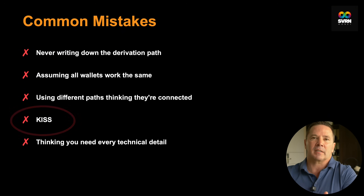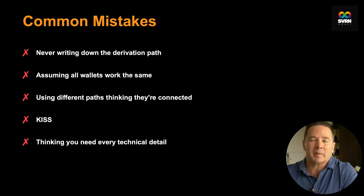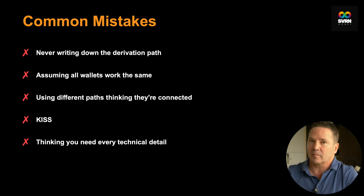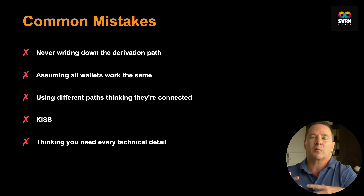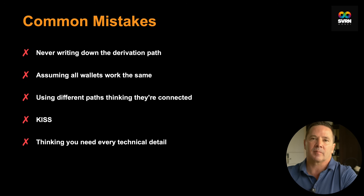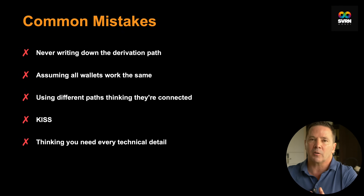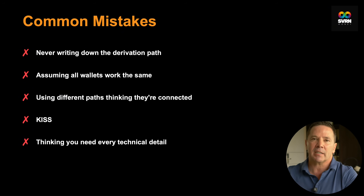Mistake four: not keeping it simple. Using different derivation paths for different purposes — legacy for savings, Taproot for spending — then six months later you can't remember what Bitcoin is where. Keep it simple when getting started: pick one path, stick with it, and document it. The final common mistake is thinking you need to understand all the details. You don't. You need to know what derivation path your wallet is using and how to change it if you need to recover somewhere else.